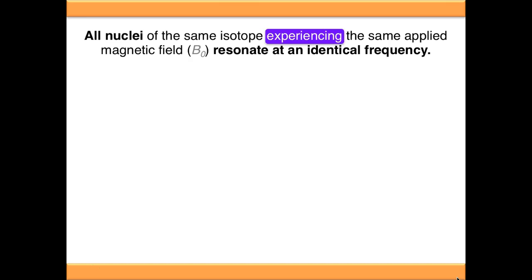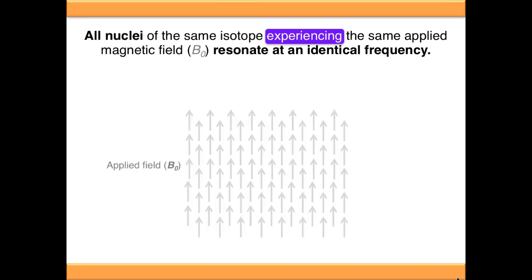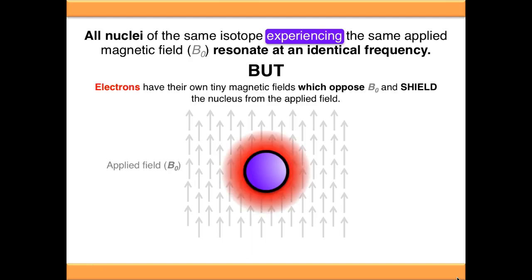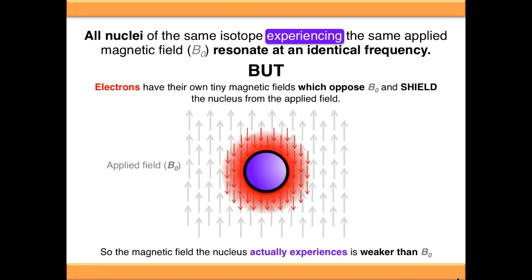The key word in this statement is 'experiencing'. If we look at the applied field and we have our nucleus in the middle of it, we often forget that the nucleus is surrounded by electrons. Electrons have their own tiny magnetic fields, and these actually oppose B0, and this has the effect of shielding the nucleus from the applied field. So the magnetic field that the nucleus actually experiences is weaker than B0, and that's dependent upon the electron density around the nucleus.